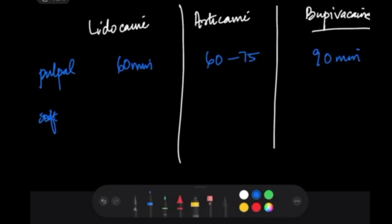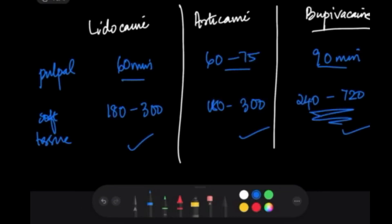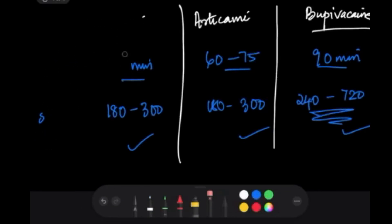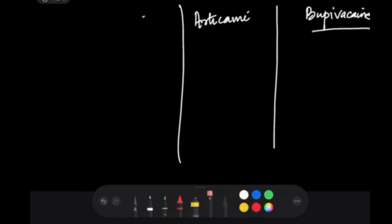When it comes to soft tissues, 180 to 300 for lidocaine, 180 to 300 again for articaine. But when it comes to bupivacaine, it is 240 to 720. Now let's talk about the concentration of use. Articaine is around 2%, articaine is 4%, and bupivacaine is 0.5%.